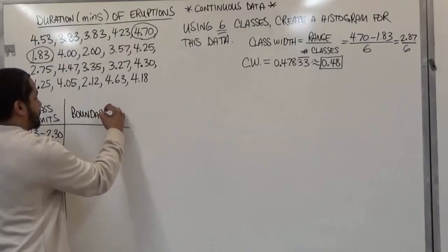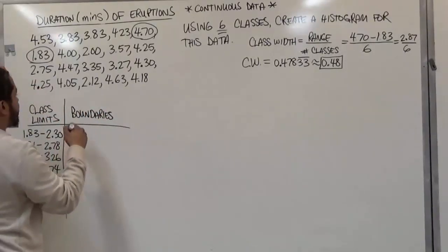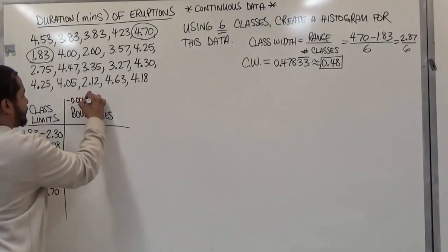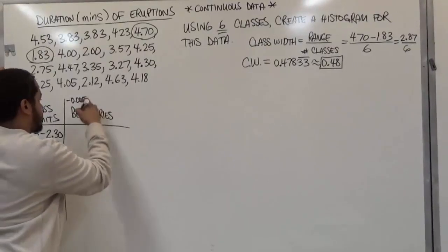Since we have numbers that are rounded to the nearest hundredth, we're going to use the nearest thousandth, and we're going to subtract 0.005 thousandths, or negative five thousandths to the left limit.